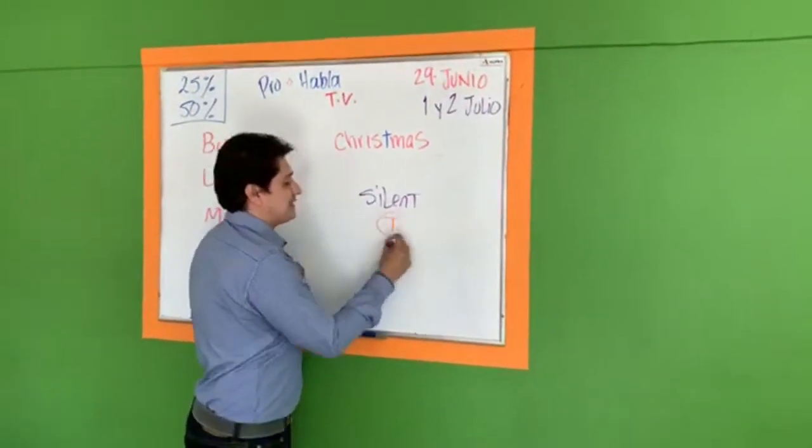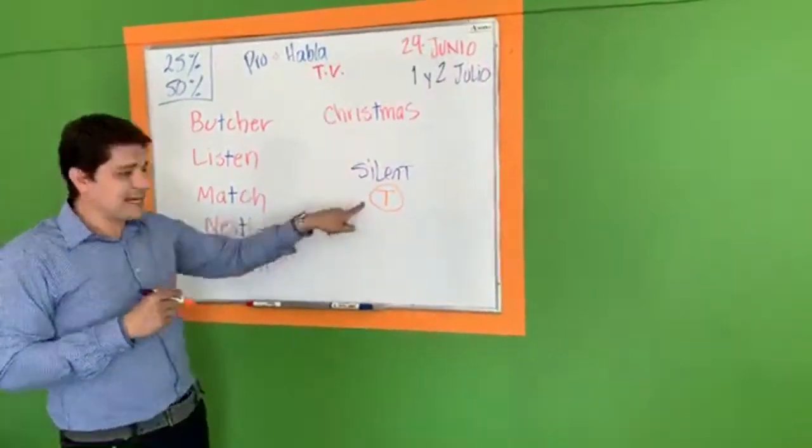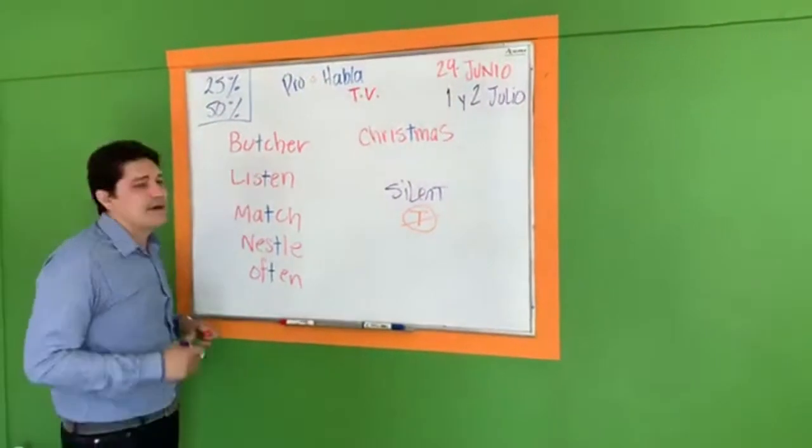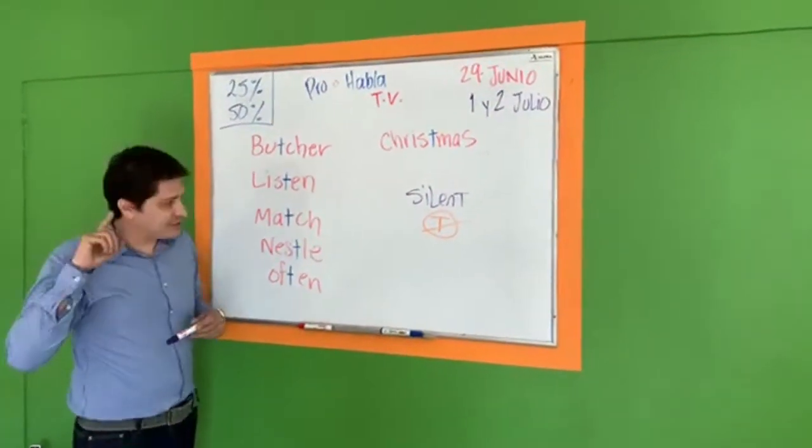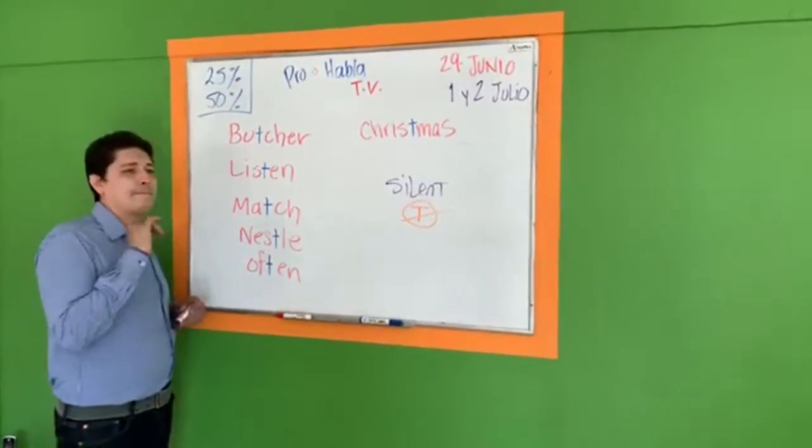Okay, silent T. Okay, like these words. Silent means that you don't pronounce this word. Okay, so this butcher. Butcher. Repeat, please. Butcher. Listen. Listen. Match.